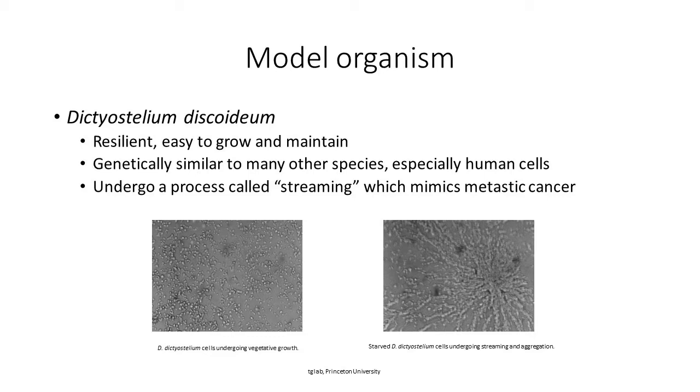They undergo a process called streaming and aggregation, which is really similar to a lot of motility. Specifically, an example is the motility of metastatic cancer. On the left here, I have a picture of the cells undergoing vegetative growth. And on the right, I have a photo of them streaming and aggregating.